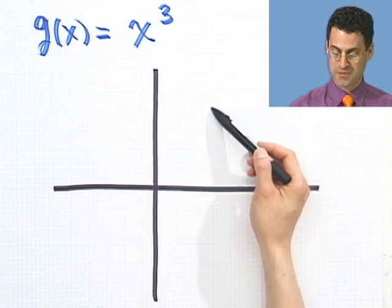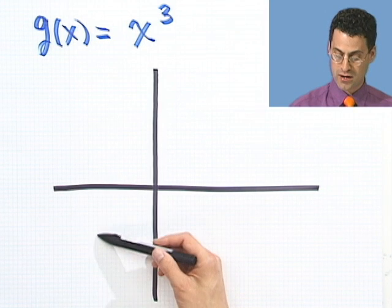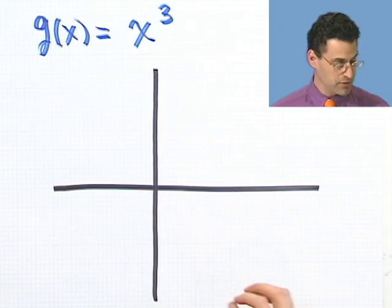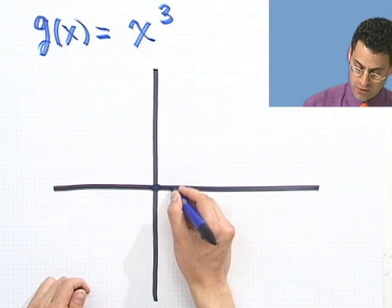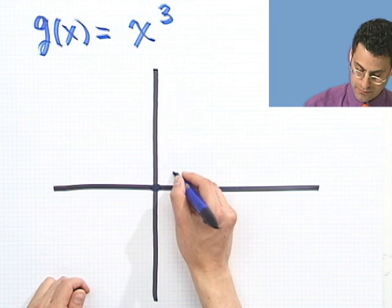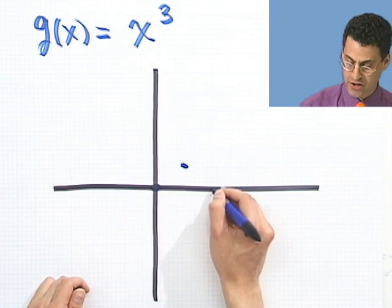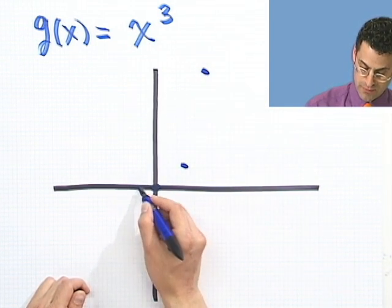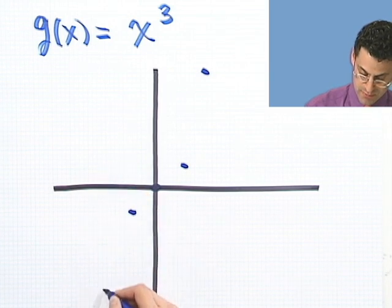I'm just going to sketch it for you real fast. It comes down like this. It has the three wings: 1, 2, 3. That's what a cubic looks like. Let's plot some points to get it exact. 0 cubed is 0. 1 cubed is 1. So 1 cubed is 1. 2 cubed is 8, so it's way up here. And here I've got minus 1 cubed is minus 1. And minus 2 cubed is minus 8.